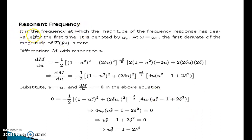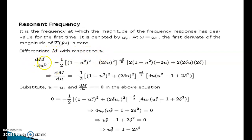Resonant frequency: it is the frequency at which the magnitude of the frequency response has its peak value for the first time, denoted by ωr. At ω = ωr, the first derivative of the magnitude of T(jω) is zero. Differentiating M with respect to u: dM/du = 0.